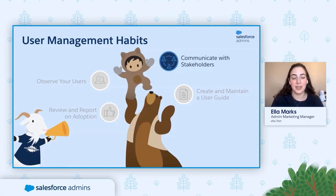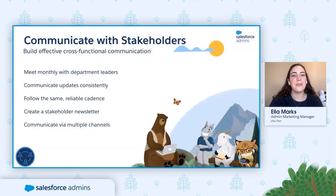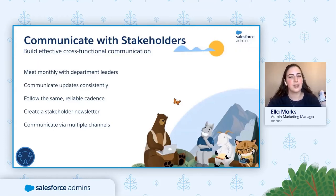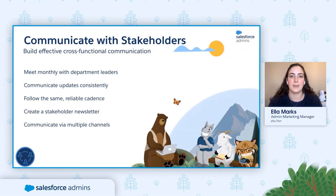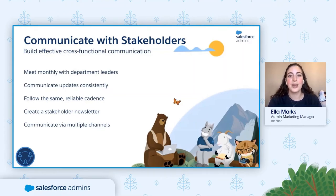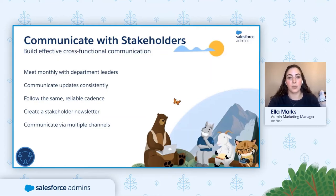Our next habit is communicate with stakeholders. Communication preferences can vary a lot from business to business, so feel free to use the cadence and channels that work best for your organization. In general, we recommend a monthly business stakeholder meeting. Stakeholders are people who lead a team that has their business process in Salesforce, like your sales manager if you're using Sales Cloud, or your fundraising manager if you're using Nonprofit Cloud. Create a recurring monthly meeting with those department leaders. During this time, you can also establish the communication preferences of everyone involved. After the meeting, make sure to send a recap to all of the stakeholders.